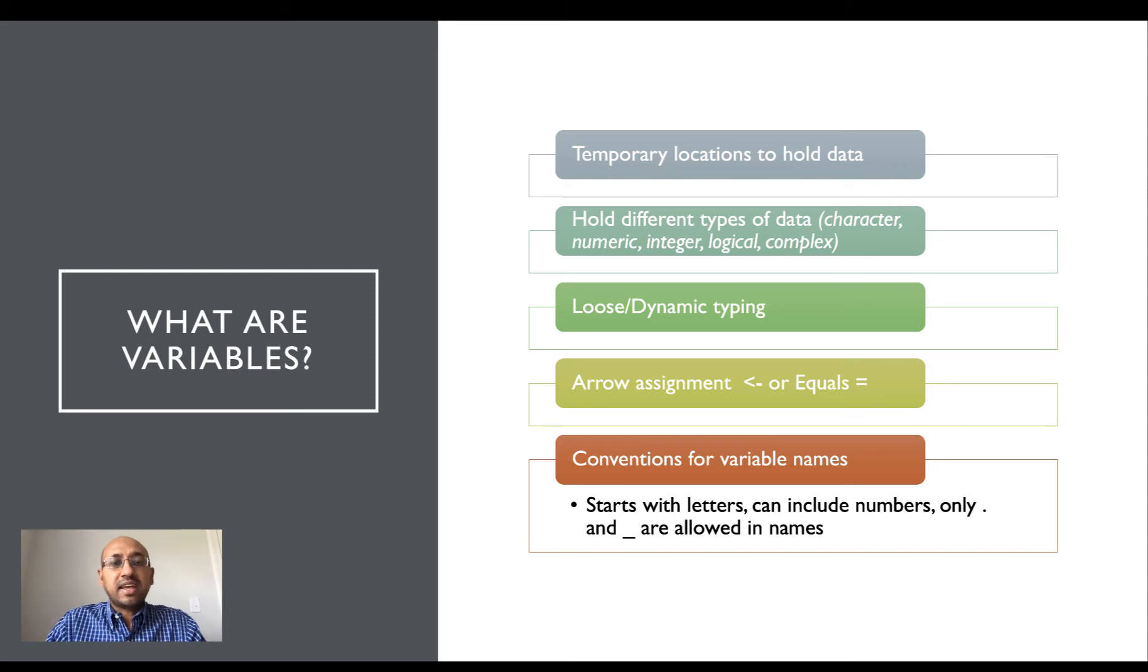Specifically in R and R studio we can work with character data, numeric data, integer data, logical data, and other complex data types. Other programming languages may have variables that hold other types of data as well. Specifically for R, these are the different types of data that variables in the R environment can hold.